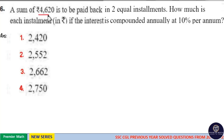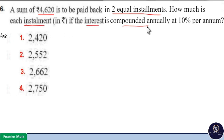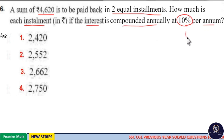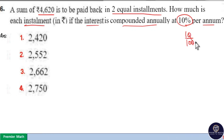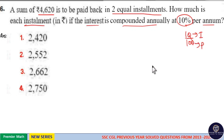A sum of Rs 4,620 is to be paid back in two equal installments. How much is each installment if the interest is compounded annually at 10% per annum? Compounded annually means interest on interest at the end of the year. 10% means 10 by 100, which means 1 by 10. So 1 part interest is generated from 10 parts principle at the end of the year.